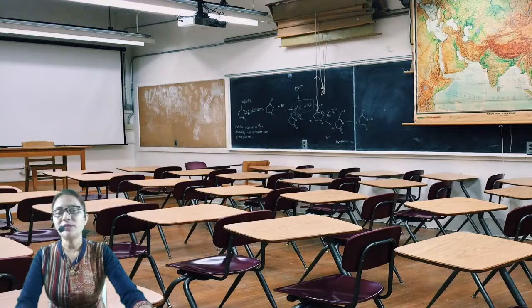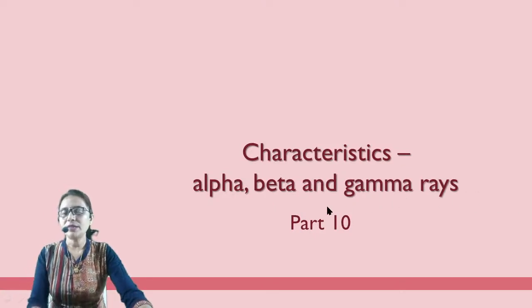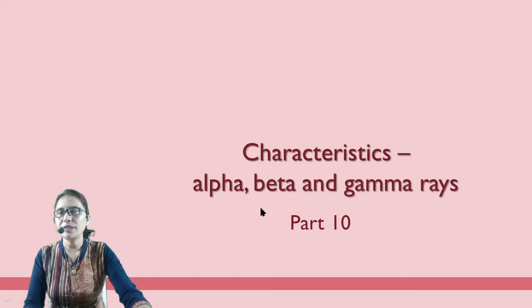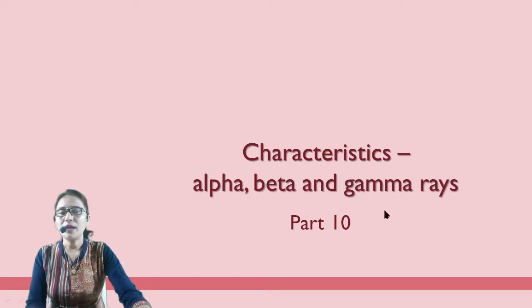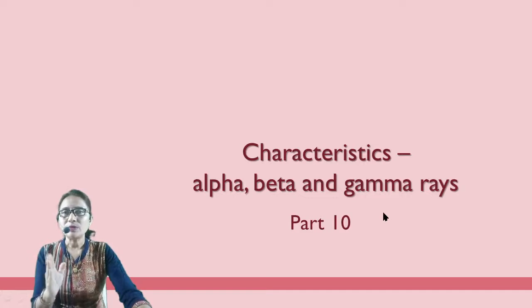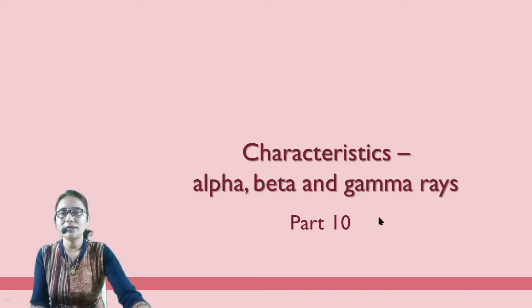Hello students, welcome back to Interscience. In the last video, we covered the three types of radiation: alpha, beta, and gamma. In today's video, we will discuss the characteristics of alpha, beta, and gamma rays — what is the charge, what is the nature, and what is the mass.